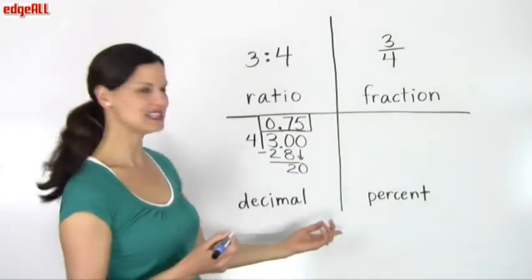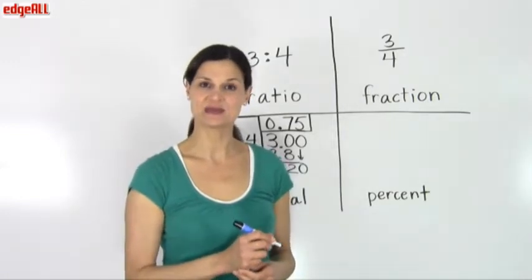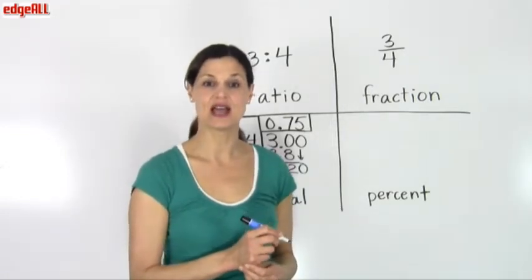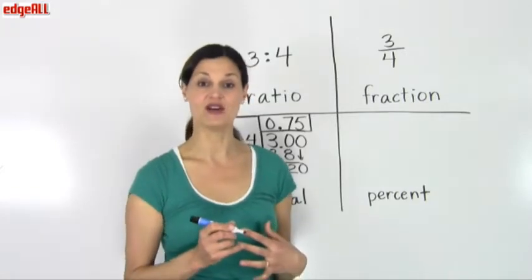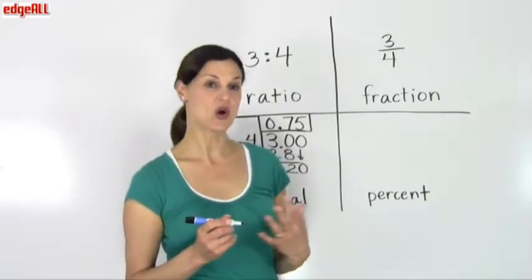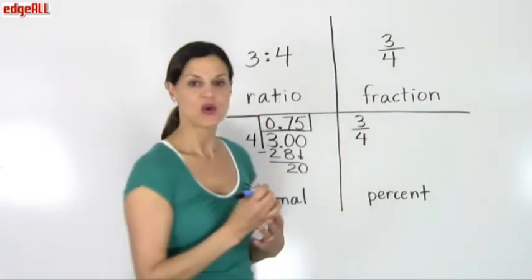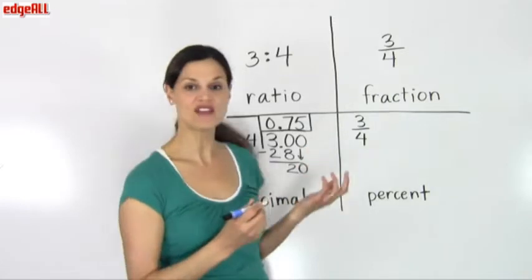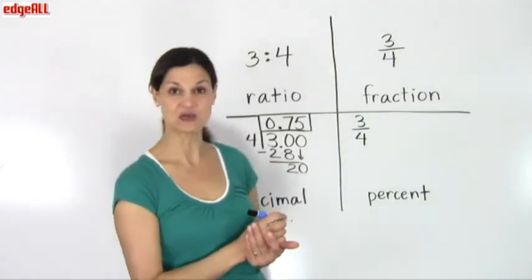In the percentage video, we have seen that a fraction can be expressed as a percentage by expressing it as a fraction with the denominator of 100. So with our 3 fourths, to express it as a fraction, we need to find an equivalent fraction of 3 fourths so that our denominator is 100.